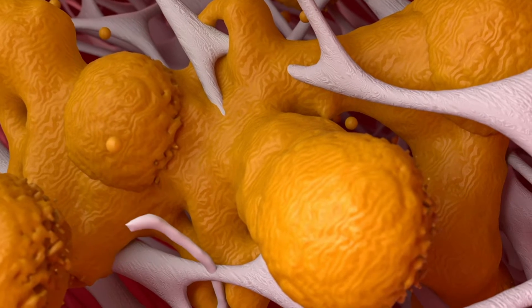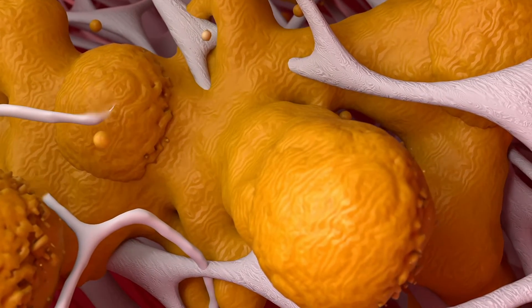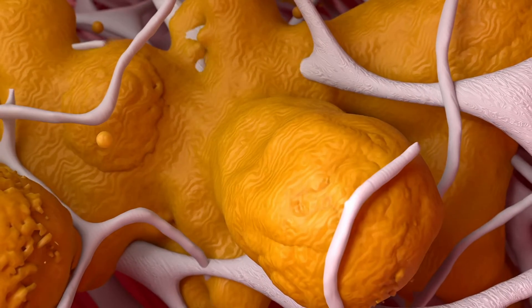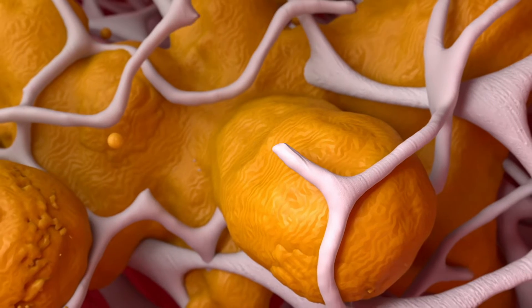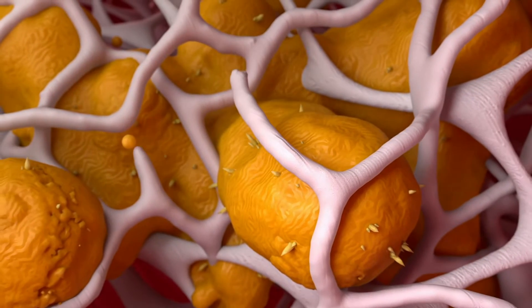Thus, cellular detritus, large numbers of foamy macrophages, collagen fibers, and cholesterol crystals form the bulk of the atherosclerotic plaque.